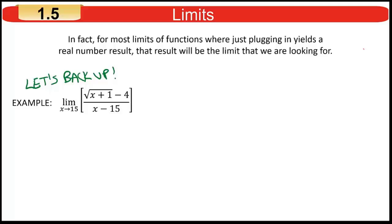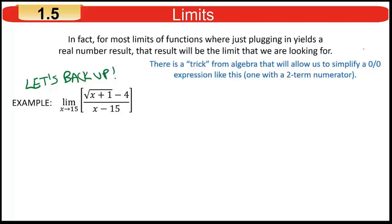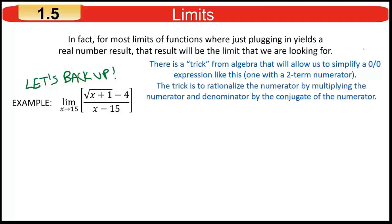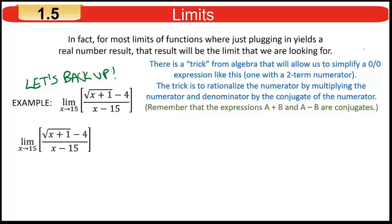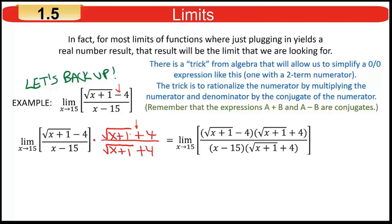You've got a two-term numerator, and the trick is to multiply the top and bottom of the expression by the conjugate of the numerator. The conjugate is what you get by changing the middle sign — if there's a plus in the middle, change it to a minus; if there's a minus, change it to a plus. So you multiply numerator and denominator by the conjugate, keeping an equivalent fraction. Down on the bottom, write the denominator as a product but don't multiply it out; focus on the numerator.